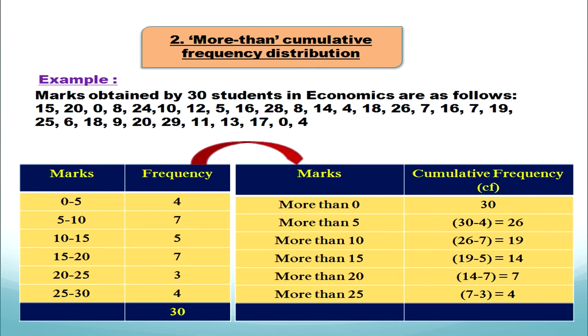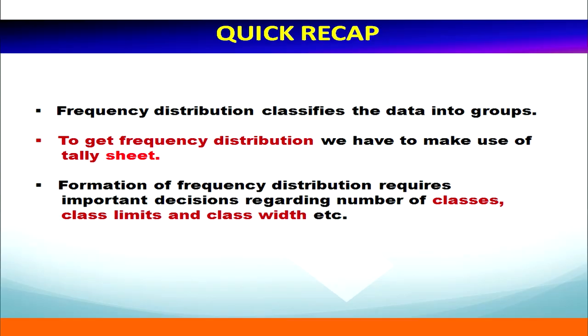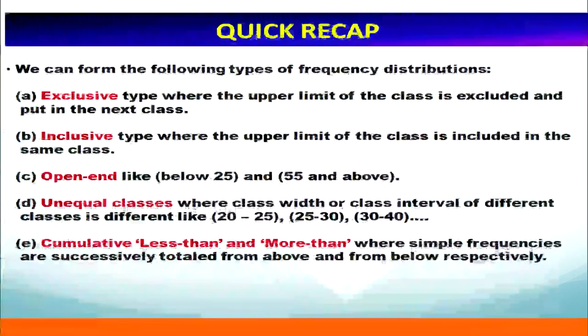So students, we have learned about less than and more than cumulative frequency distribution. Now let's have a quick recap. We have learned about frequency distribution which classifies data into groups, how to convert from inclusive to exclusive and exclusive to cumulative frequency distribution, and the concepts of class, class limits, and class widths. We covered exclusive series, inclusive series, open end, unequal classes, and cumulative less than and more than. I hope you have learned many concepts from this class. Thank you.